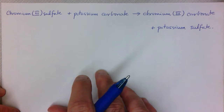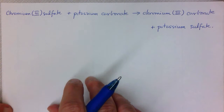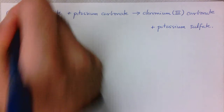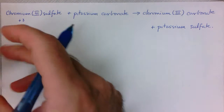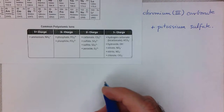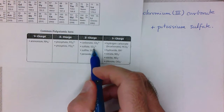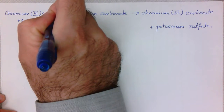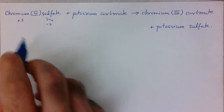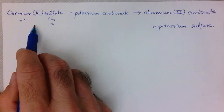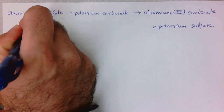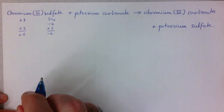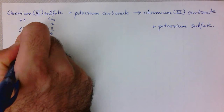Let's start by writing our chemical formulas. We have chromium 3, so we know that's the version with a charge of plus 3. Now we need to check sulfate — it must be a polyatomic ion, and yes, sulfate is SO₄ with a charge of minus 2. So we need everything to balance out to form a neutral compound, so we'll multiply chromium by 2 to get plus 6 and sulfate by 3 to get minus 6.